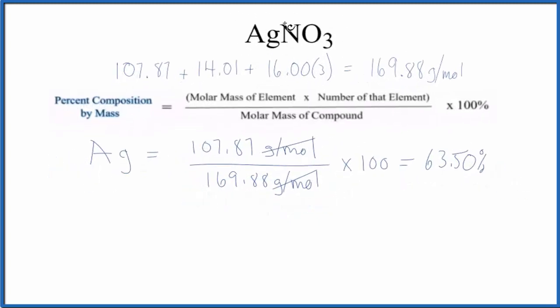That means if we had a sample of silver nitrate, the mass of the silver would make up 63.50% of the mass of the compound.